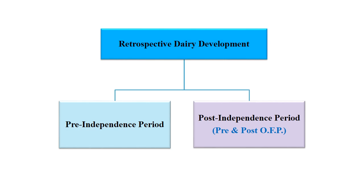We will first discuss the history of development — the retrospective development of dairy industry in India — and at the end discuss the present status in more detail. This development history will be covered in two categories: one is the pre-independence period before 1947, and next the post-independence period after 1947. The post-independence section will have two separate parts: first, the pre-Operation Flood program period, and second, post-Operation Flood, since Operation Flood plays a major role in increasing dairy development in India.